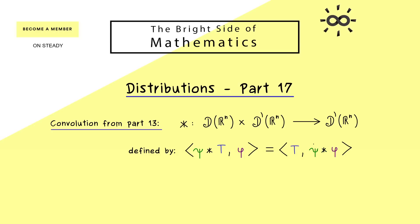However, we have to change a little bit. We have to give a rotated head — the check operator — to psi. This is not a complicated operator; it is just a reflection, so this new function is just psi of minus x, almost the same function reflected over the y-axis. So this is the whole definition of the convolution of distributions where the first part has to be a test function — or a regular distribution represented by a test function.